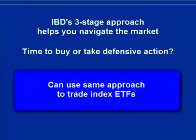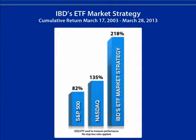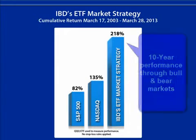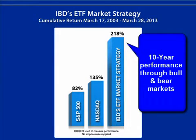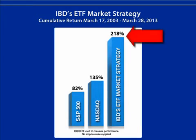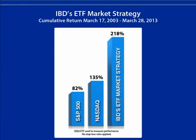You can also use that approach to trade index-based ETFs. It can be a good way to grow your money over time. From the start of a new uptrend on March 17, 2003, through March 28, 2013, IBD's ETF market strategy significantly outperformed the NASDAQ and S&P 500. While that does not guarantee future performance, it does show that if you stick to the rules covered in this video, this simple approach can help you build financial peace of mind.